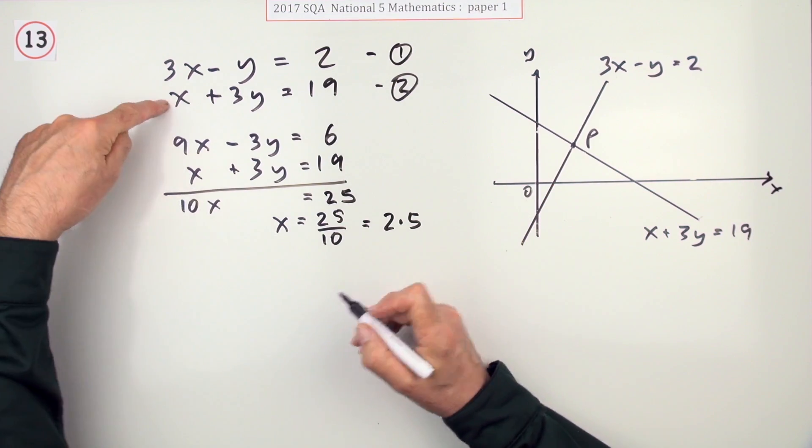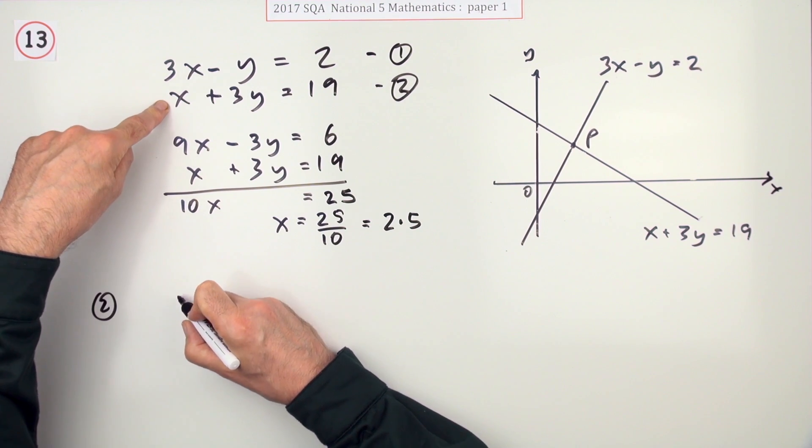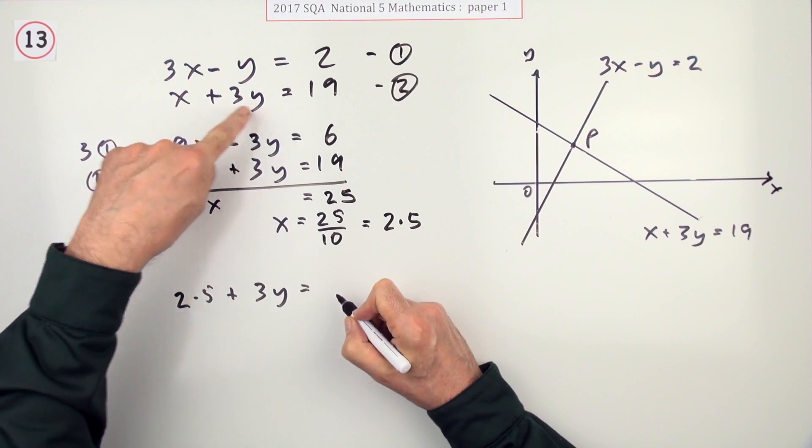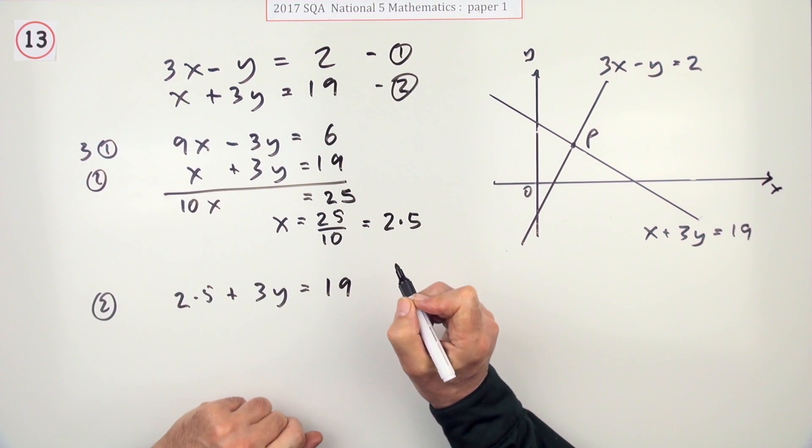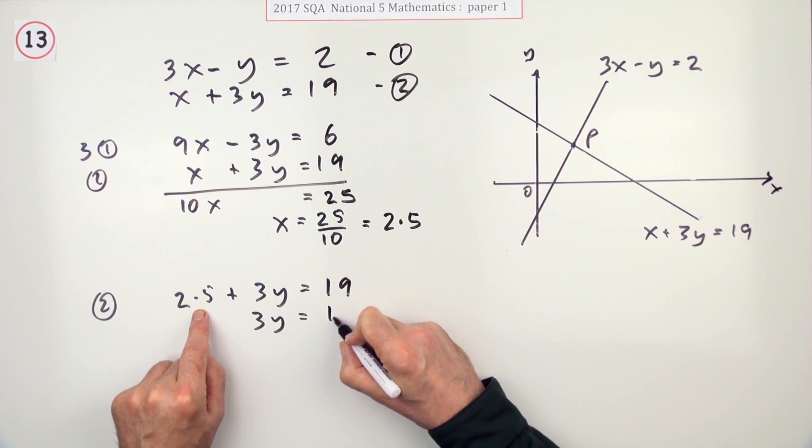Now to find y, I'll just go back to equation 2. And with equation 2, it says x, which is 2.5, plus 3 lots of y will make 19. Well, that means that 3y will be 19, I'll just put it down,